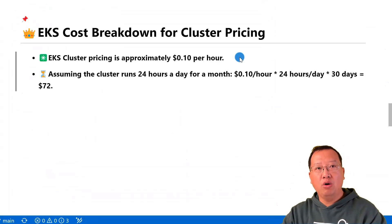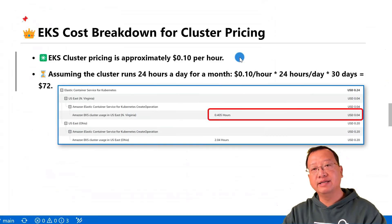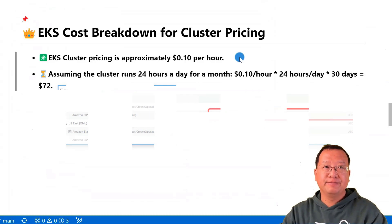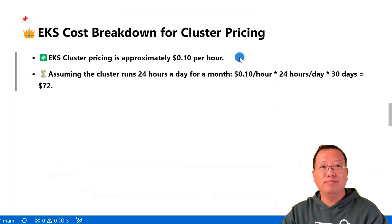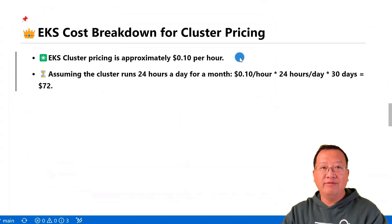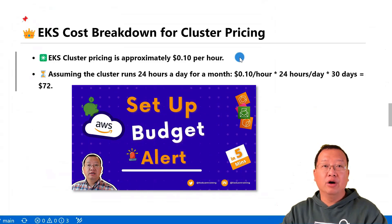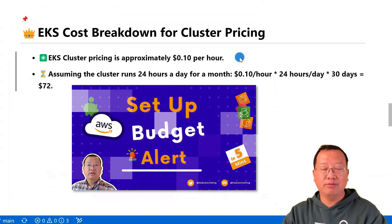If it's running at least one hour, you'll be charged by the minute based on the official documentation. This is my bill — you can see the difference. My charge appears to be billed in 10-minute increments. Remember to check your spending regularly and set up a budget alert to monitor your bill effectively. If you don't have a budget alert, I recommend creating one. My video on how to set up an AWS budget alert has step-by-step guidelines.